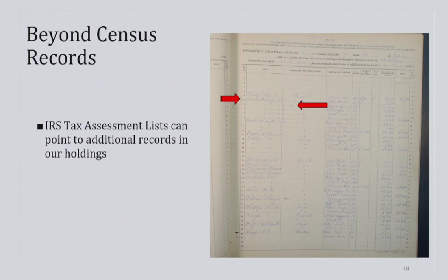The tax assessment list can take us beyond the census records too. Here we see J.S. Van Valkenburg in the 1870 annual list of Indiana District 9. Van Valkenburg was taxed on his wholesale retail liquor businesses, as well as being a tobacco dealer and an insurance agent — he was a busy man. If you note the arrow pointing toward the left, there's a little X near his name.